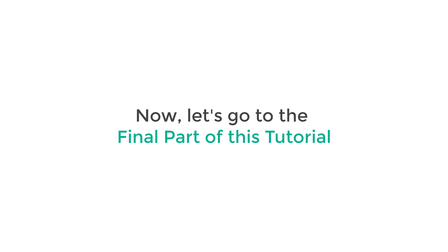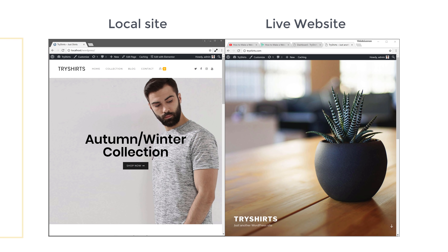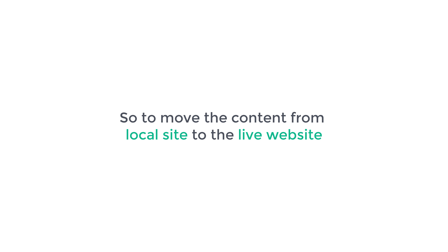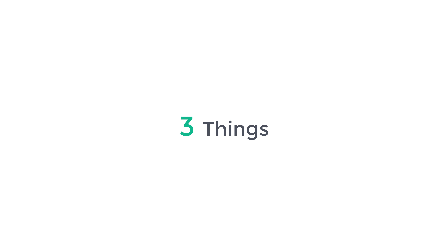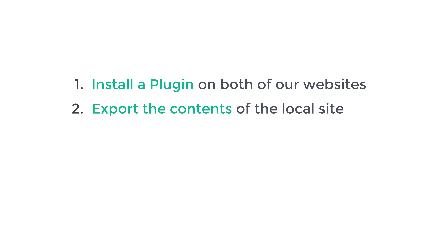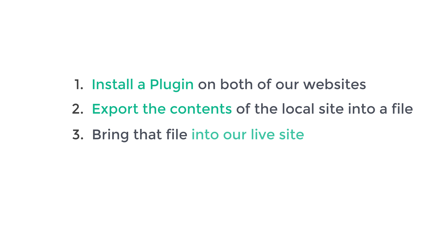Now let's go to the final part of this tutorial, which is to bring in the content from the local site to this live website. To move the content, we're going to do three things: first, install a plugin on both websites; then, using the plugin, export the contents of the local site into a file; and finally, bring that file into the live site.